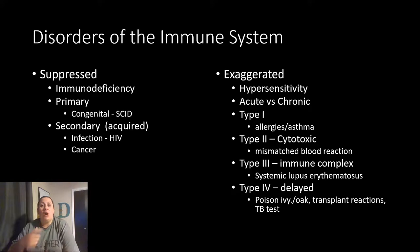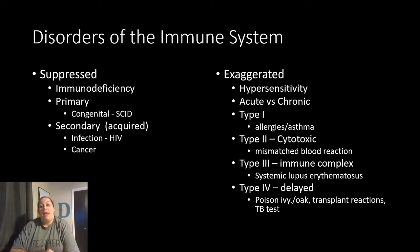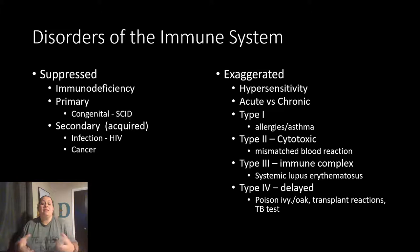Type 2 is a cytotoxic form of hypersensitivity, where the cells destroy other cells. The main example of this is a mismatched blood reaction — if you're type A blood and they gave you a type B blood transfusion, your body would react by destroying all those B cells because they do not belong.